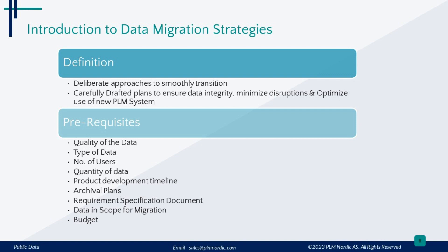Some crucial prerequisites for a successful PLM data migration strategy are: data quality is paramount; understand the data types at play; factor in user count for a smooth transition; quantity of data intended for migration; understand the product development timeline; plan data archiving thoughtfully; document your requirements comprehensively; define your data scope precisely; and understand budget constraints.